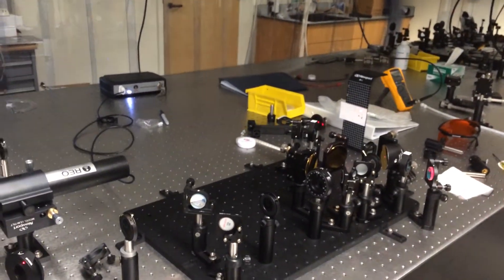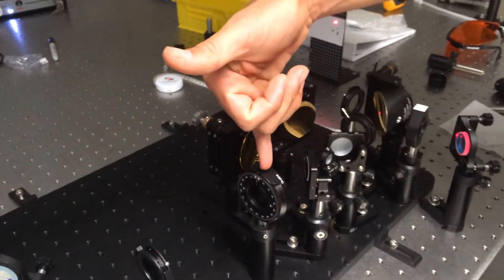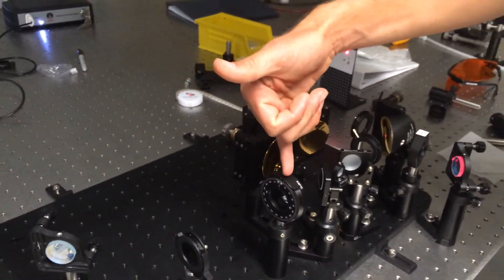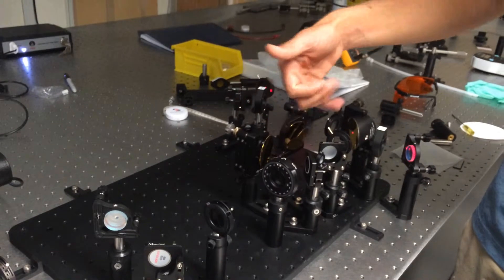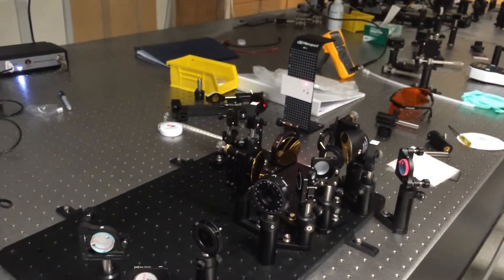This is what's going to go inside the vacuum box. And you can see this is where we'll put a zinc telluride to generate the terahertz field and reflect it onto our sample, and then do electro-optic sampling over here.